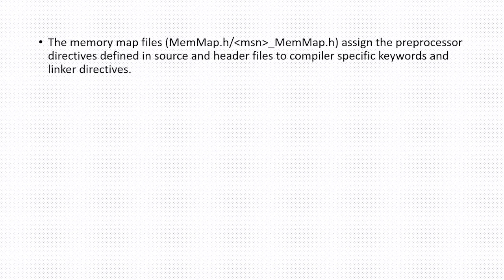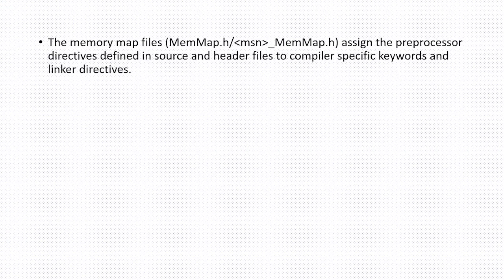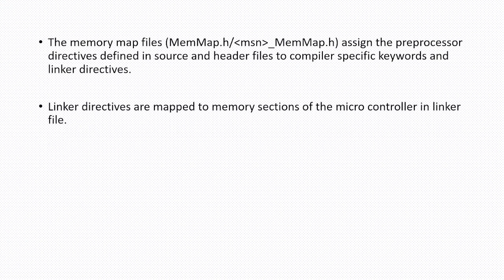The memory map files — the memmap.h file, or the MSN_memmap.h, the module short name — for example, os_memmap.h or com_memmap.h. These assign the preprocessor directives defined in source and header files to compiler-specific keywords and linker directives. The linker directives are then mapped to memory sections of the microcontroller in the linker file.